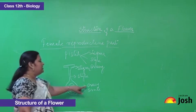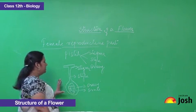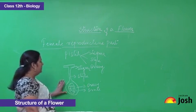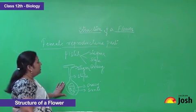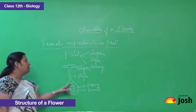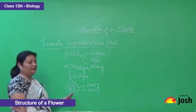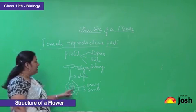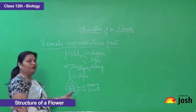Next, let us come to the ovary. Ovary is the swollen basal part present in any flower. This basal part has, inside it, an ovarian cavity. The ovarian cavity consists of many ovules.